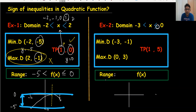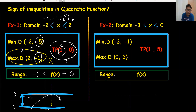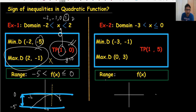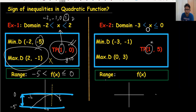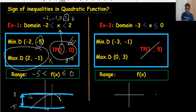Moving to example two: the domain is minus three to zero. The key rule is — when the turning point's x-value is inside the given domain, we must use the turning point. When the turning point's x-value is not in the given domain, we do not use the turning point.